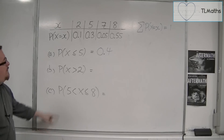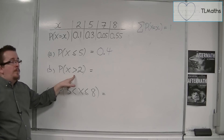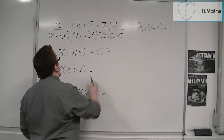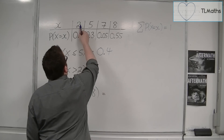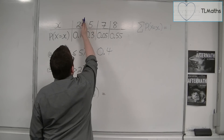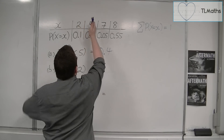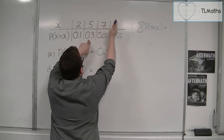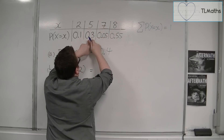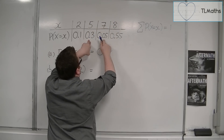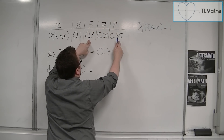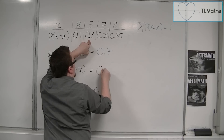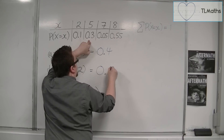If we want the probability of X being greater than 2, then we want all the probabilities for values larger than 2. So we've got 5, 7, and 8. That gives us 0.3 plus 0.05 plus 0.55, which equals 0.9.